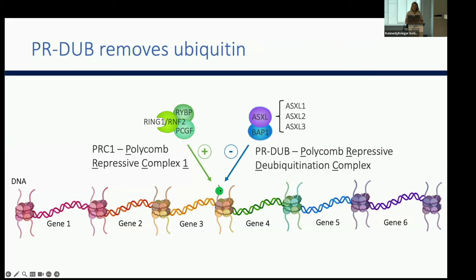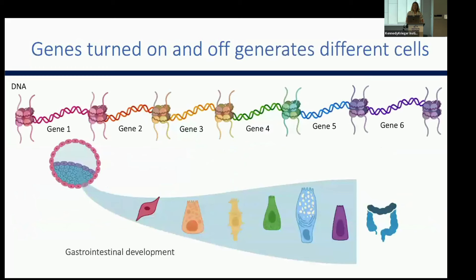To move this ubiquitin mark around between different nucleosomes so different genes can be activated or repressed in different ways, you also need to be able to remove it. That is the role of PR-DUB — it deubiquitinates, meaning it takes that ubiquitin mark off. Since ubiquitin is repressive, removing it can allow gene activation. So PR-DUB is a repressive deubiquitination complex, and connecting development with gene regulation, ubiquitin placed by PRC1 and removed by PR-DUB, involving the ASXL genes, leads to different cell types.